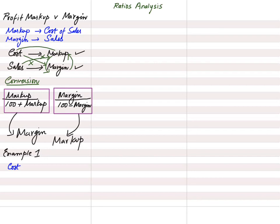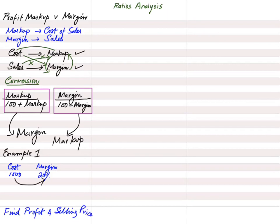Let's do a simple example. The cost price is given as $1,000 and a margin percentage of 20% is given. The requirement is to find profit and selling price. First, ask: can a 20% margin percentage be applied to a cost figure? The answer is no — margin can only be applied to selling price.